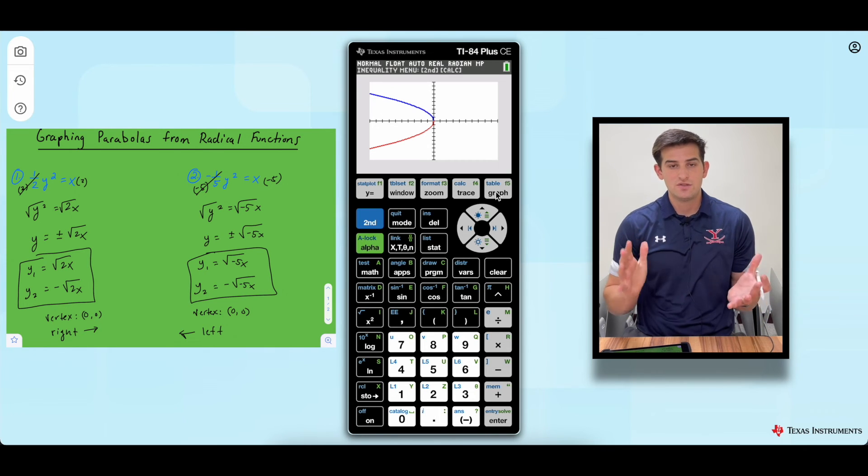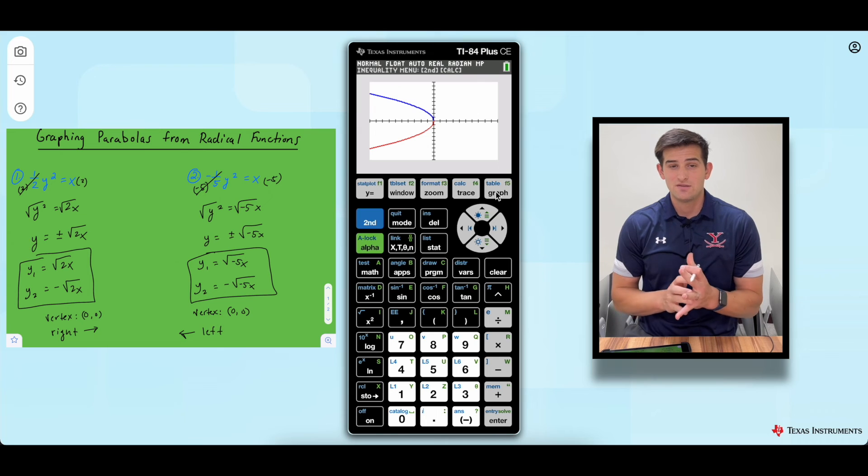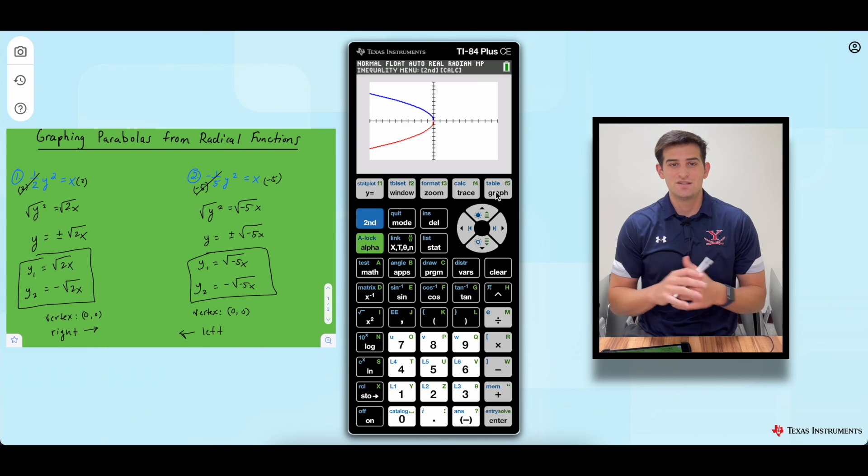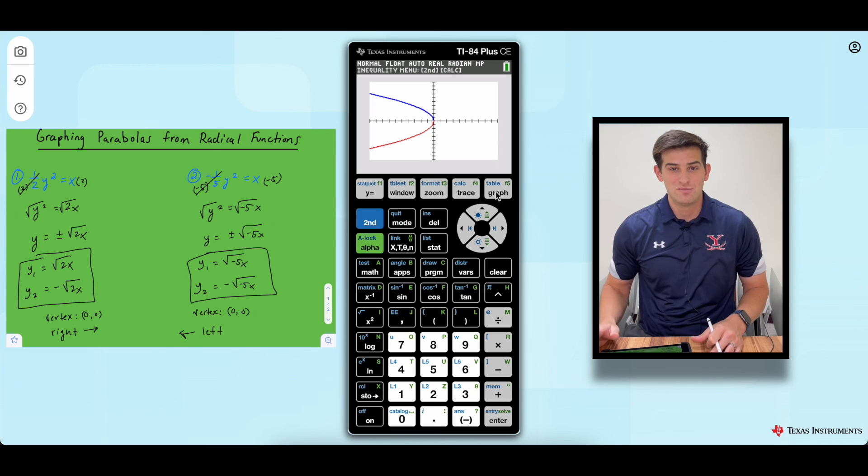So we graphed two sideways parabolas. These wouldn't be functions. So that's why we're just calling it a parabola and not a quadratic, because that's what a parabola typically is when it opens up or down. So that's how you can use the TI-84 Plus CE graphing calculator to take a radical function and graph a parabola.